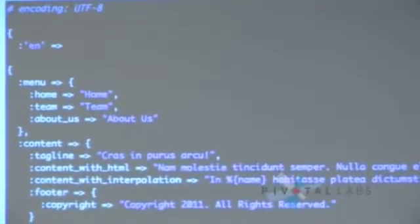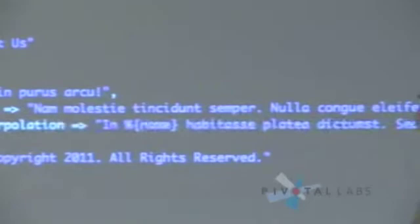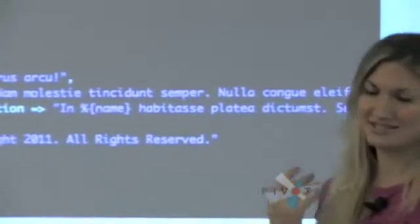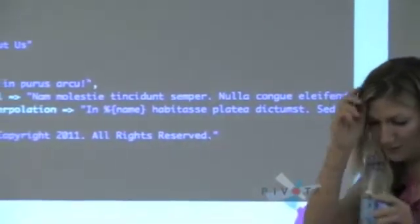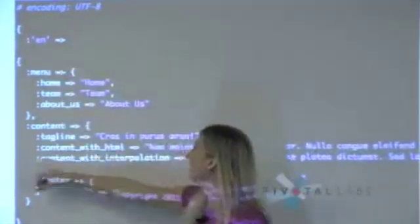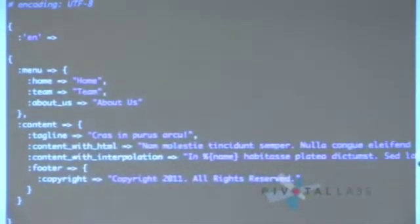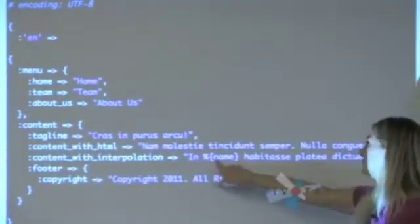What happens to the content is you move it into a separate file called a locale file, which goes into your config/locales directory. You can do either YAML or Ruby files — I prefer Ruby files because they're much easier to work with. You define your locale at the top, then you break it down into different sections and subsections — basically a nested hash with your key and content values. Here's an example of what an interpolated variable would look like.